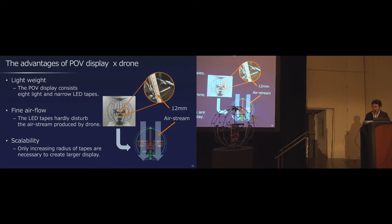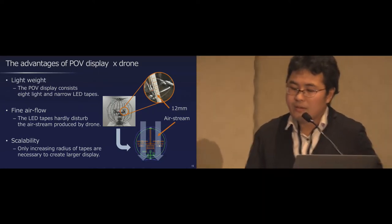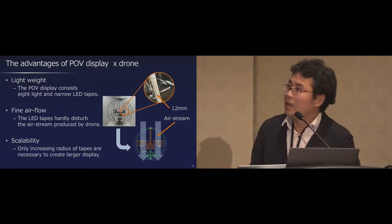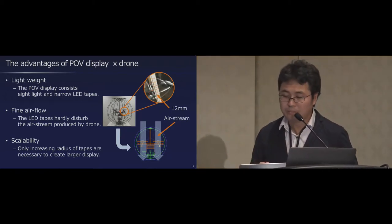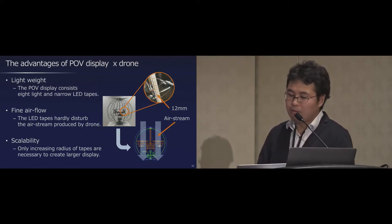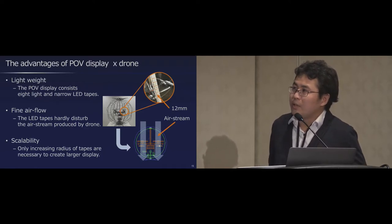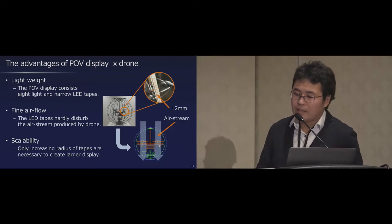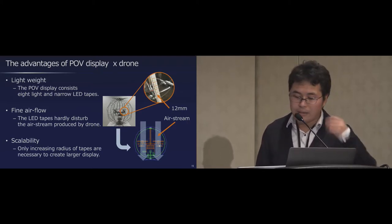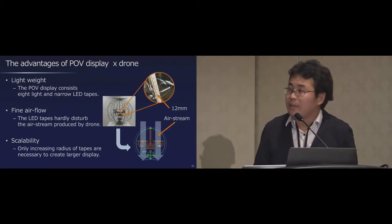I consider that the combination of the drone and POV display has many advantages. First, the spherical hollow image looks larger and high resolution. However, actual LED tape is very narrow, about 12 millimeters. So its weight is much lighter than the same size real spherical LED display. Besides, LED tape is narrow, so ice sphere allows air to flow through them, so the effect on the airstream is very small. It also has nice scalability because the bigger display can be created by only increasing length of the LED tapes. We regard that bigger ice sphere, such as several meter ice sphere, is possible and it matches for signage and performance in large event halls.